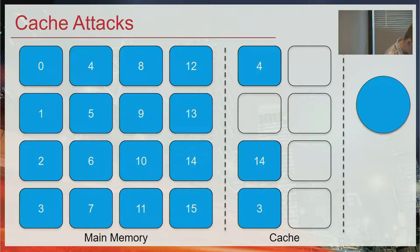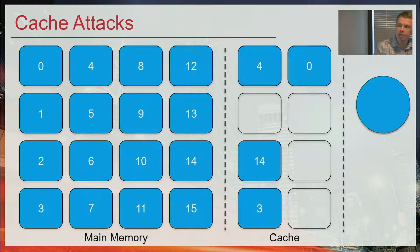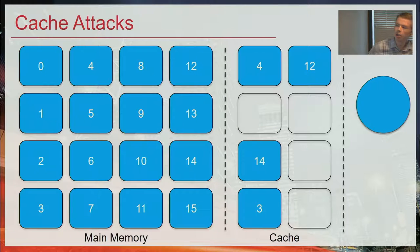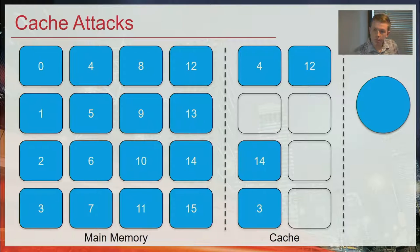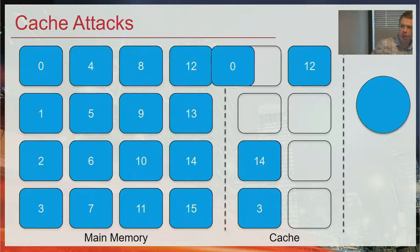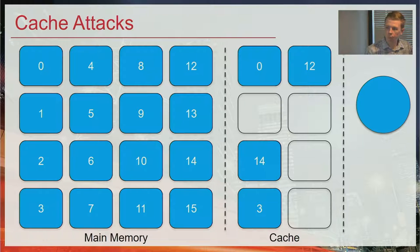If we try to read something in the same row as data already in the cache and there's room, it fills that address — such as when we read address 0. But when a set is full and we read address 12, we have to evict something from the cache to make room. For this presentation, we'll assume eviction is done randomly. The number of entries within a set that can hold cache data are called the ways — this example is a two-way set associative cache.